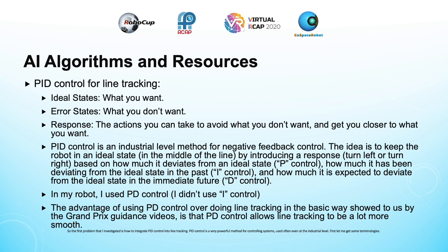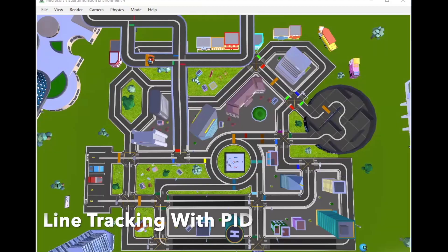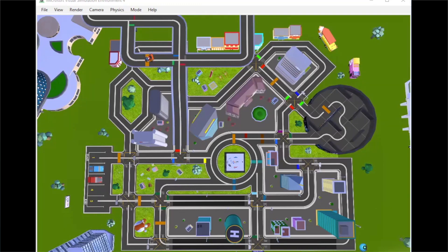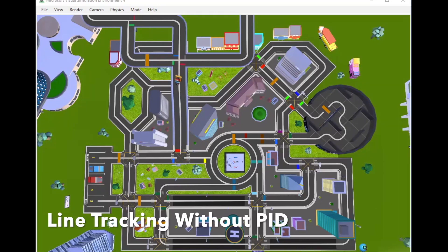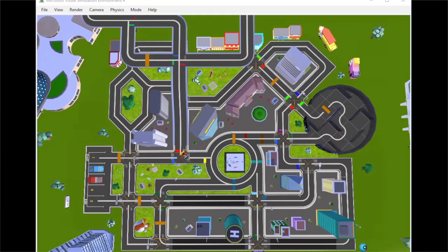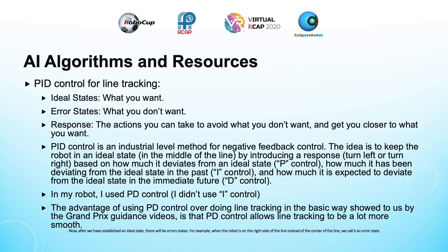The first problem I investigated is how to integrate PID control into line tracking. PID control is a very powerful method for controlling systems, used often even at the industrial level. What we call the ideal state is what we want to achieve. In our case, we ideally want our robot to be in the center of the line that it is following — being in the center of a line is our ideal state. After we have established an ideal state, there will be error states. For example, when a robot is on the right side of the line instead of the center, we call it an error state.